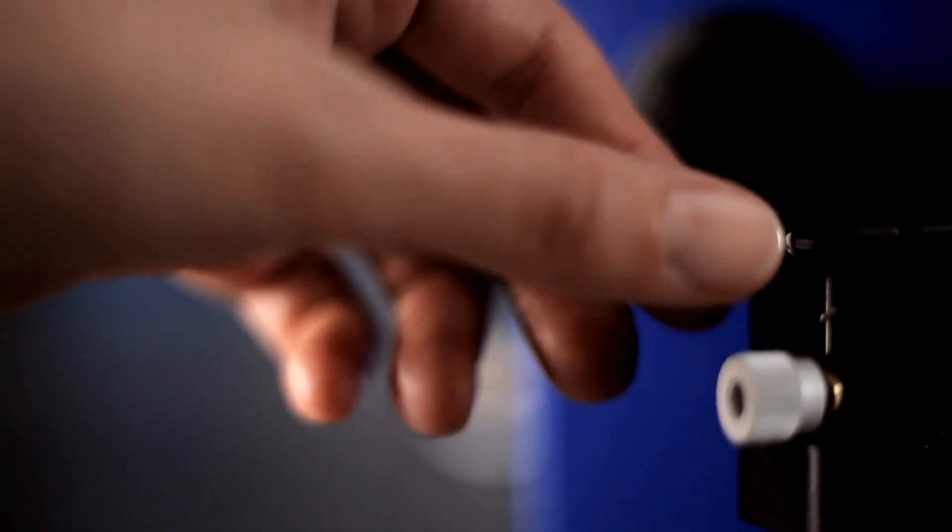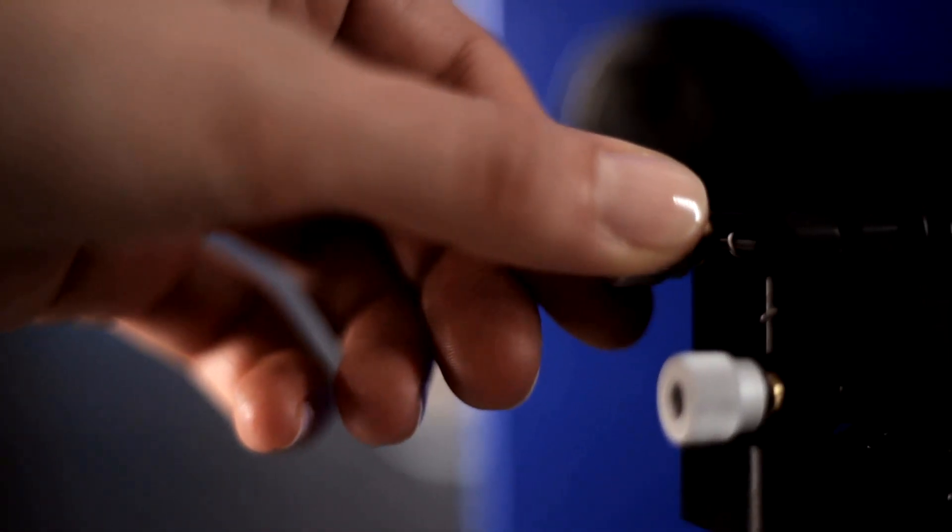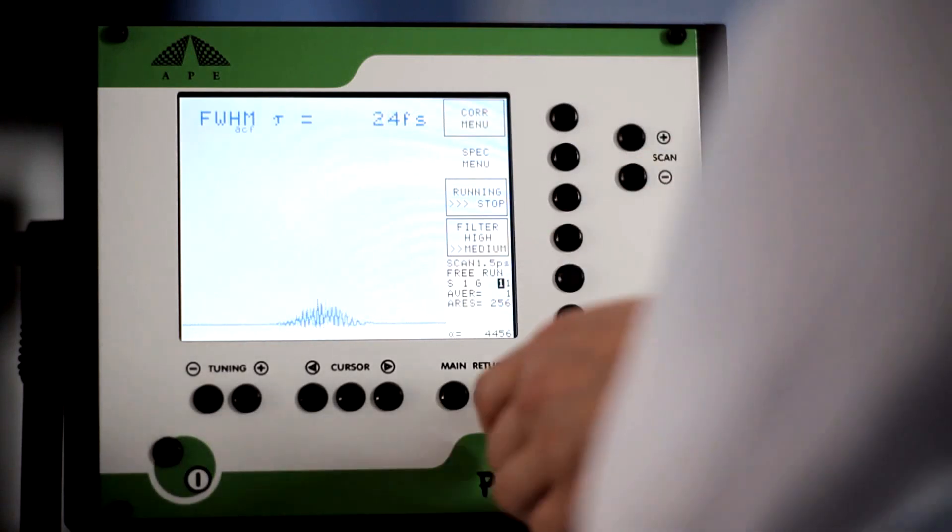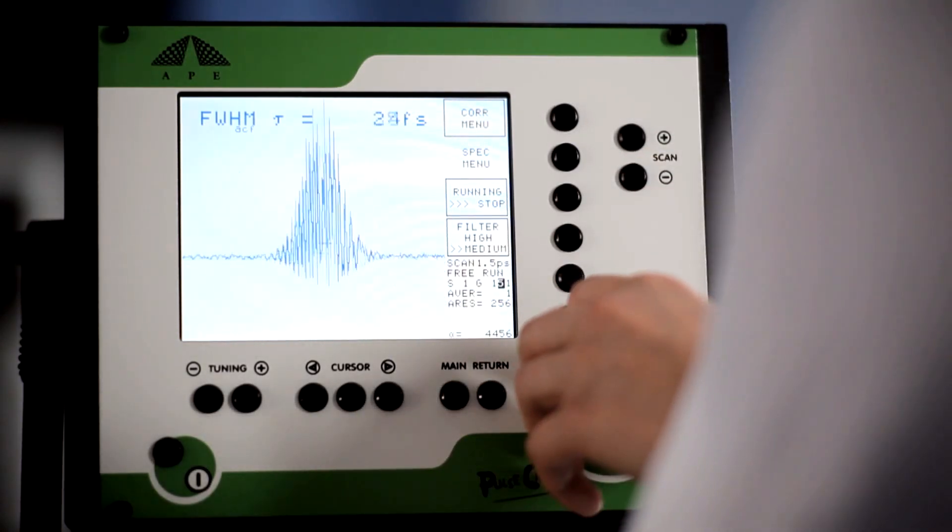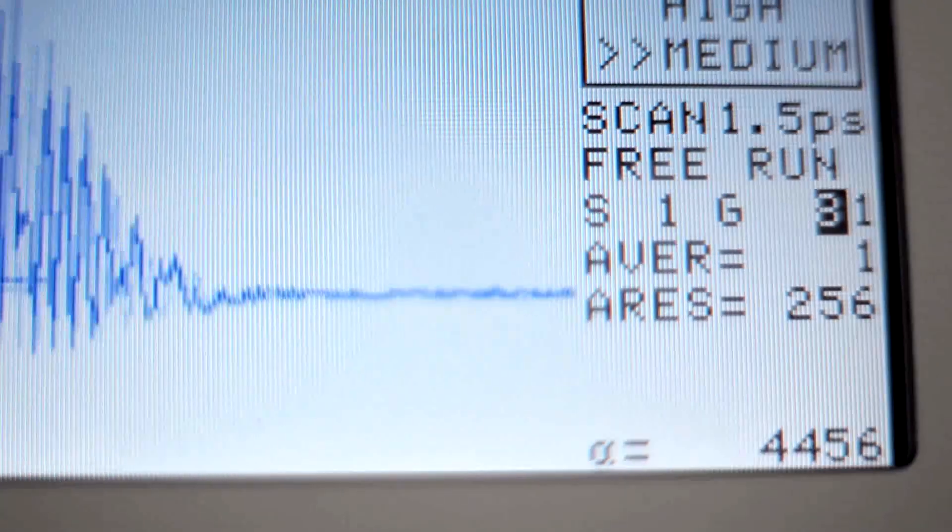To optimize the signal, gently turn the mirror screws. The controller screen should now display a measurement curve. If you only see a flat line, turn the gain dial to increase the signal. To see a measurement curve, your controller should also be set to free run mode.